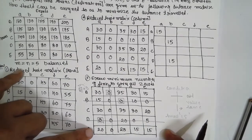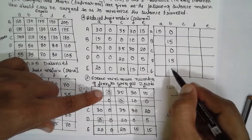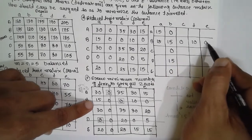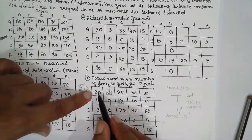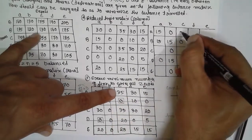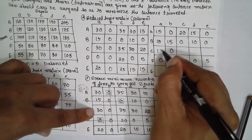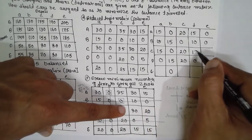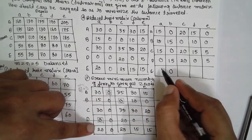Line-covered values remain unchanged: 0, 0, 0, 15, 0, 10, 0, 0, 20, 0, and 5. For uncovered cells: 30 minus 15 is 15; 35 minus 15 is 20; 15 minus 15 is 0; 35 minus 15 is 20; 10 minus 15 gives 5 (adjusted); 20 minus 15 is 5; 25 minus 15 is 10; 15 minus 15 is 0. The updated matrix is now ready for the next assignment step.